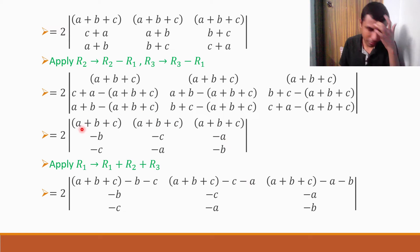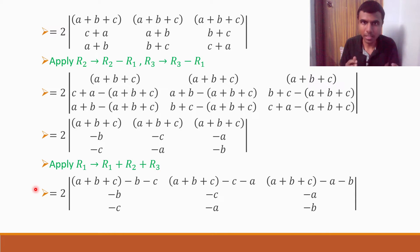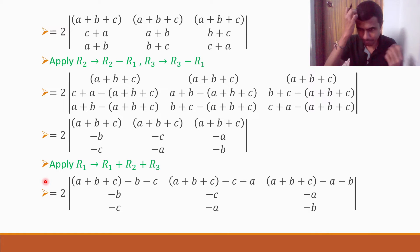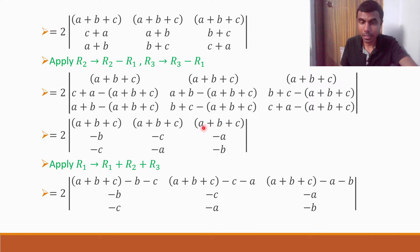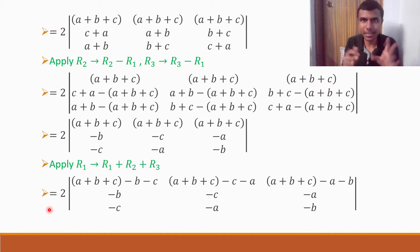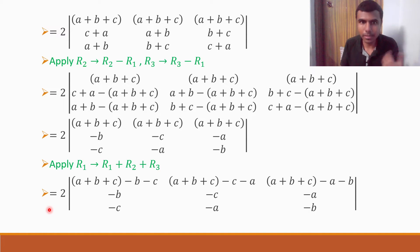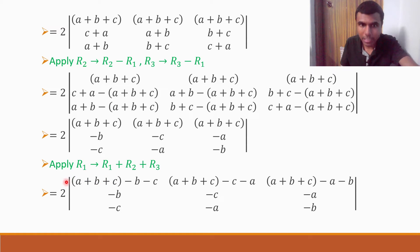Again, if R1 is involved, only R1 elements will change — row 2 and row 3 elements remain as they are. Simplifying: A plus B plus C minus C minus B — B and C cancel, leaving only A. Here, A and C cancel, leaving only B. And here, A and B cancel, leaving only C. So now the first row has A, B, C as single terms.